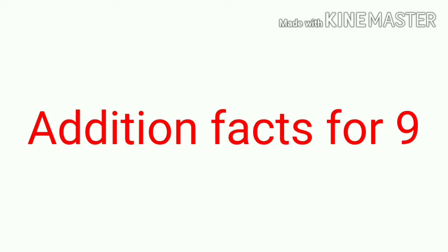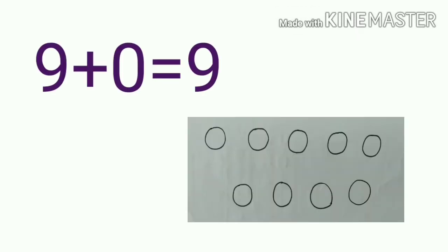We have to find out the pairs of numbers that give the answer 9. Here you can see 9 circles. All the circles are unshaded. We are going to add the number of unshaded circles and shaded circles. Here we have 9 unshaded circles and 0 shaded circles. So we can add: 9 plus 0 is equal to 9.